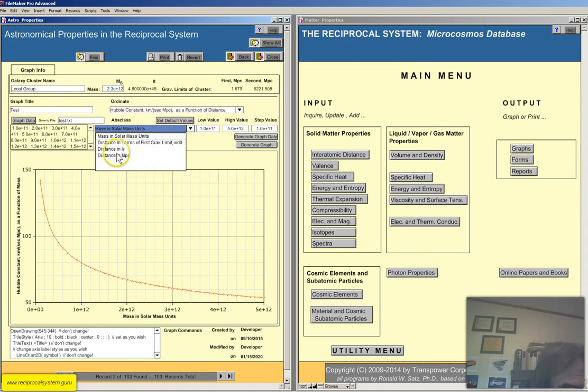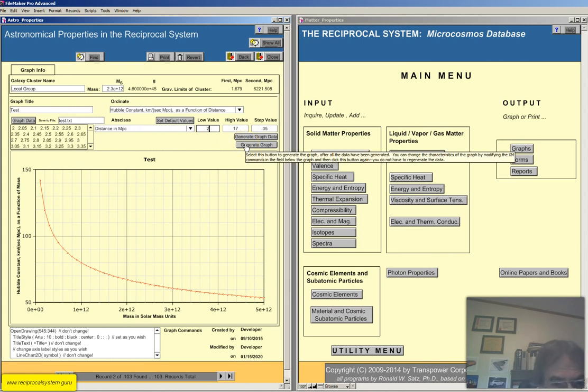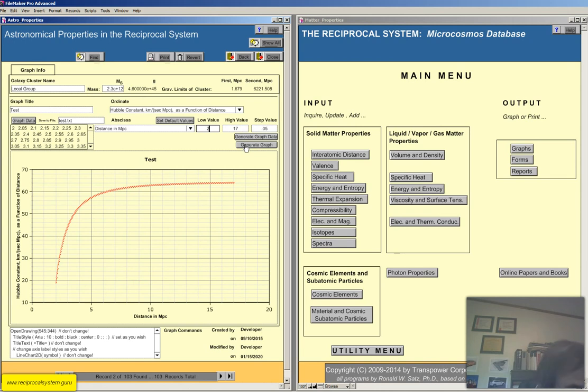And as a function of distance. So I'm going to change this to distance, say megaparsecs. Set default values, generate the graph. So this is a Hubble constant as a function of distance in megaparsecs. So it increases and then it levels off.